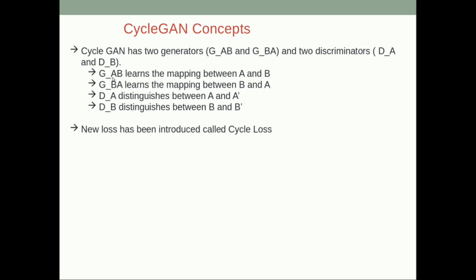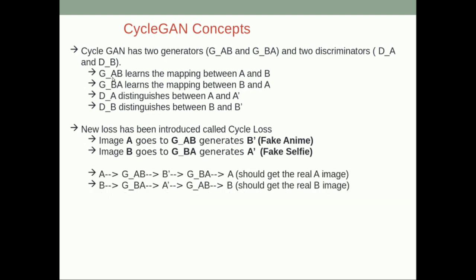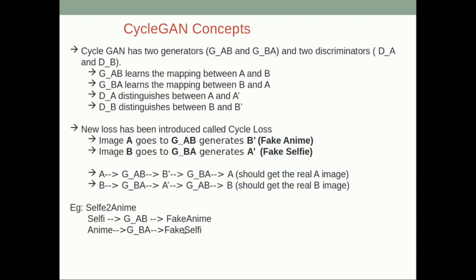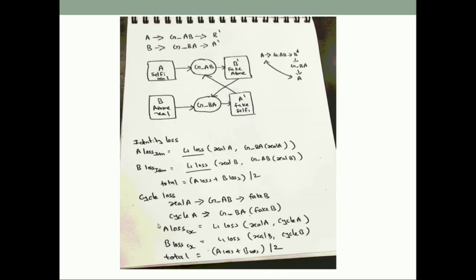A new loss proposed in the CycleGAN paper is called cycle loss. The real image goes to the first generator, which produces a fake anime. That fake anime goes to the second generator, which should ideally return the same original image. For example: a selfie goes to G_AB to get fake anime, which goes to G_BA to get a reconstructed selfie. The constraint is that this reconstructed selfie should be the same as the original selfie — that constraint is called cycle consistency loss.